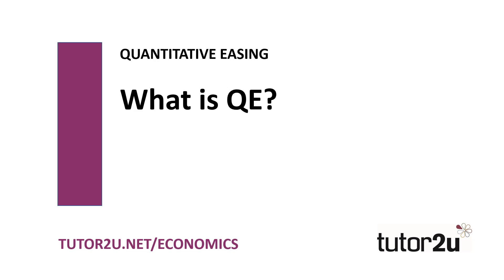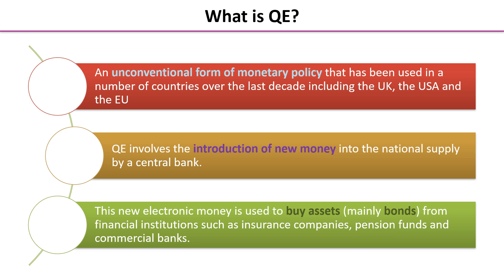In this section we're going to have a much closer look at what quantitative easing is. QE is an unconventional form of monetary policy. It's been used in a number of countries in the last decade or two, including Japan, the UK, USA and the EU, and it involves introduction of new money into the national money supply and is conducted by the central bank.